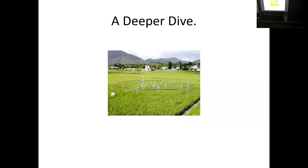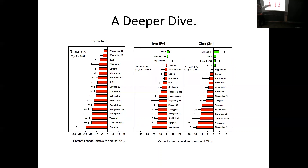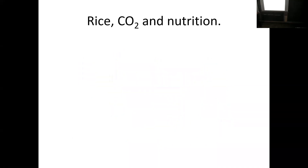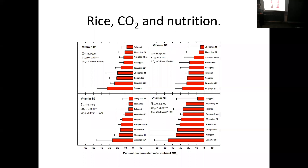This is a variation of what I showed you for loblolly pine — a FACE system here, looking at 18 different lines of rice for percent protein. Pretty ubiquitous among all the different lines, including hybrids, japonica, and indica — the general trend is a reduction. This is the iron and zinc composition — a little more variation, but the general trend is for reduction. We did vitamin analysis for nine of the 18 lines — vitamin B1, B2, B5, and B9 — and there are significant effects for all of these.